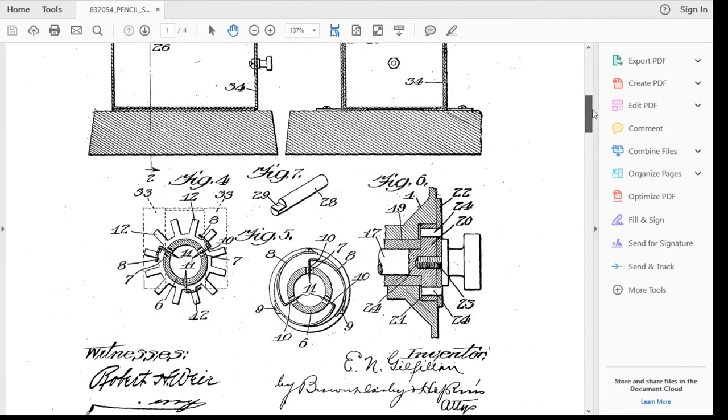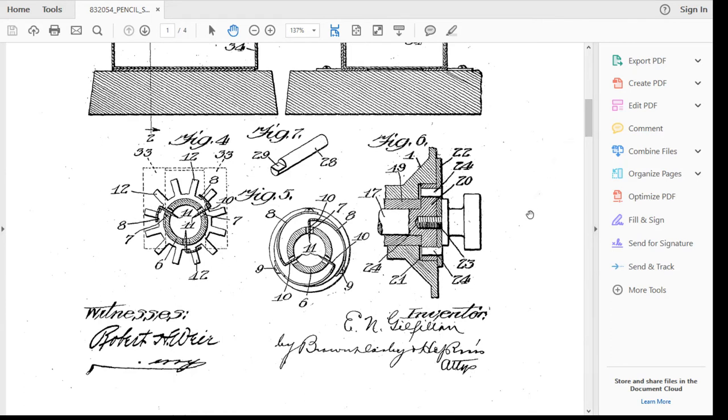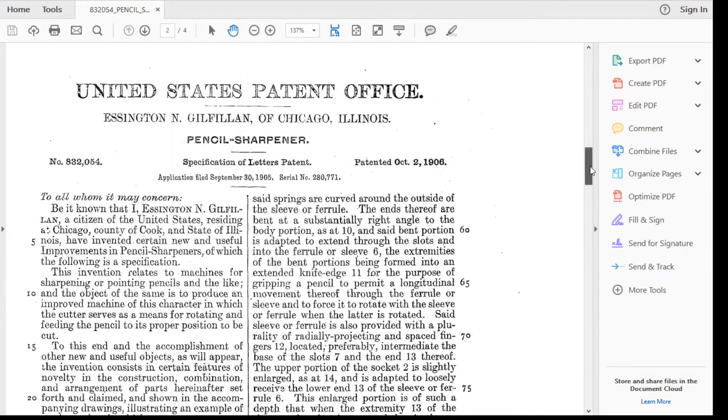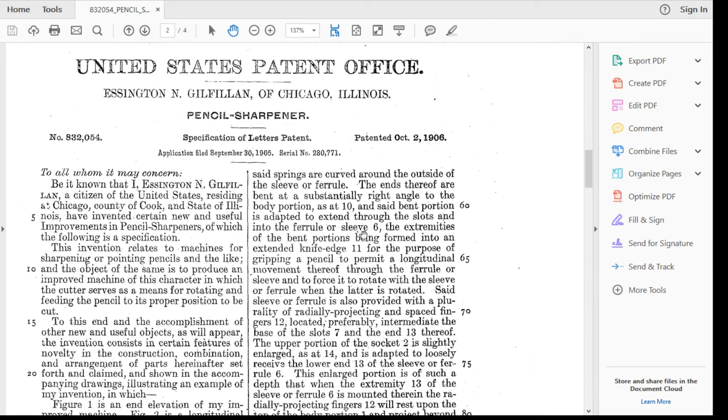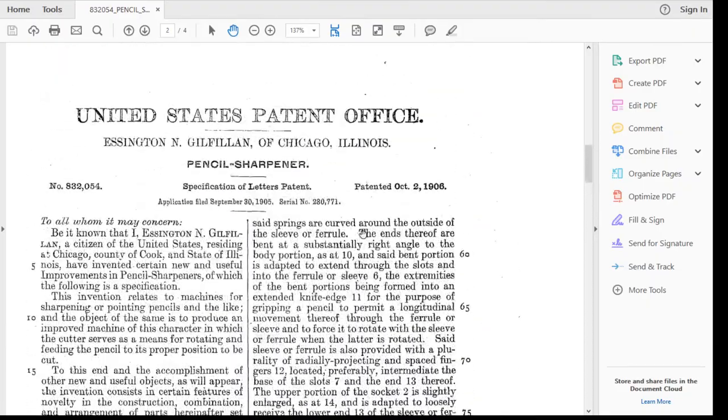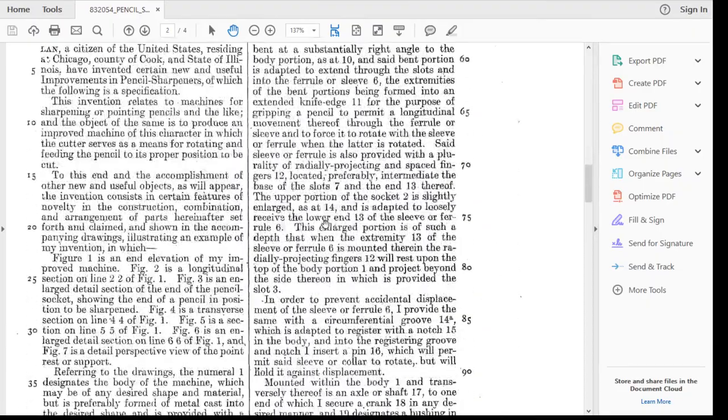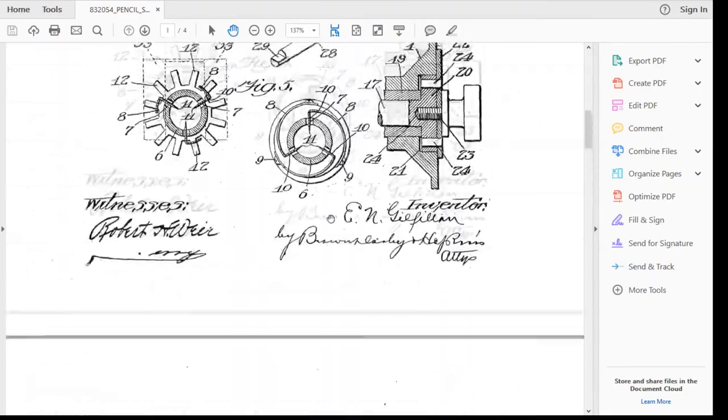When you come up with a new idea, you usually want a witness saying I swear that this is a new idea this guy came up with on this particular date. The patent application was filed September 30th, 1905 and issued October 2nd, 1906. So about a year. Patents these days are taking about two or three years to get through the system, but back then they were a little quicker I guess. Anyway, fun. I thought you'd enjoy that.